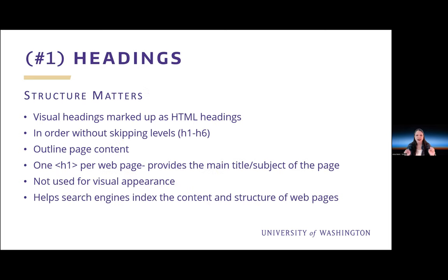To begin our count of five things, number one is to create an accessible heading structure, because structure matters, especially for assistive technology users. Make sure visual headings are marked up as actual headings and not just styled like headings with different fonts, different colors, or larger text size.